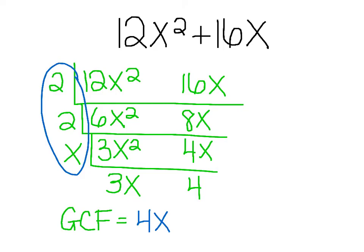Remember step 1 — find the GCF first. We take out the GCF and write the remainder in parentheses, because step 2 says divide each term by the GCF. So 12x² divided by 4x, and 16x divided by 4x — those results go inside the parentheses. We've already done that through the upside-down division process; our remainders are 3x and 4. Since 4 is positive, it's 3x + 4. We essentially did the distributive property backwards, taking out the common factor 4x.